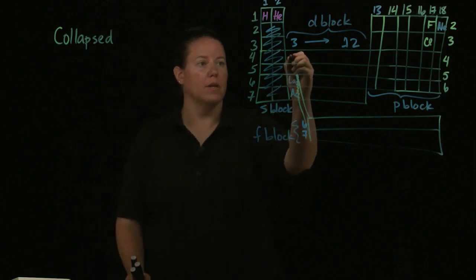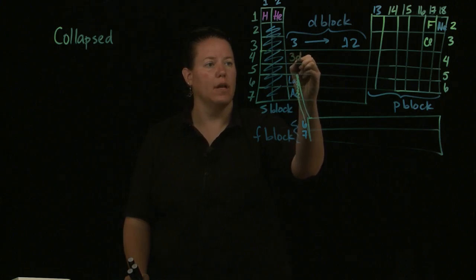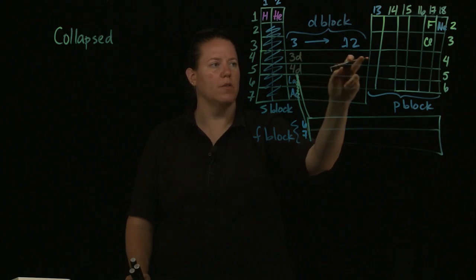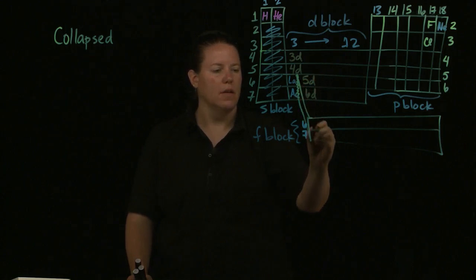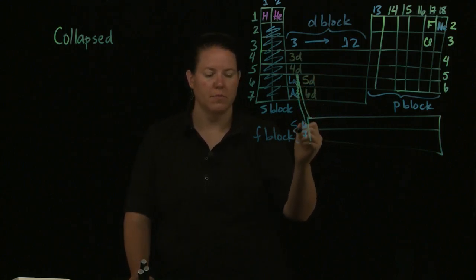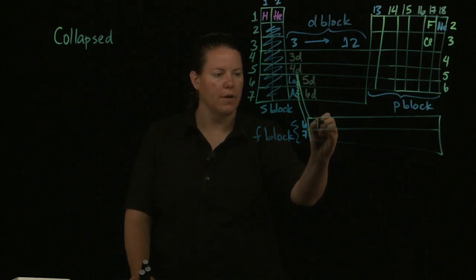We also subtract one for the D block off of the period number and two off of the F block for the period number. So these become things like 3D and 4D. This whole row through the D block is 3D. This whole row is 4D. This is 5D, 6D. And on the F block, we subtract 2 from 6. That would be 4F and 5F.